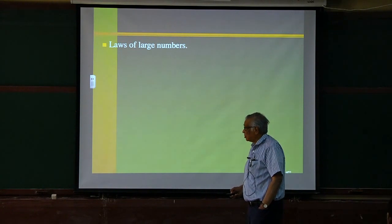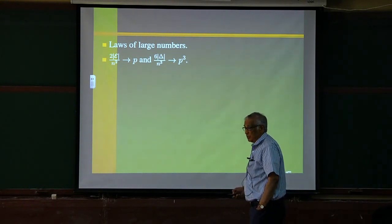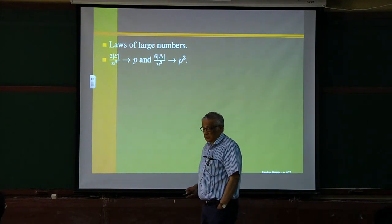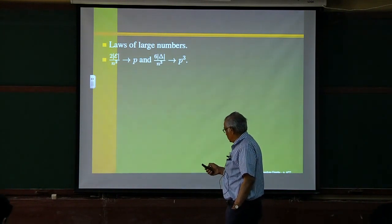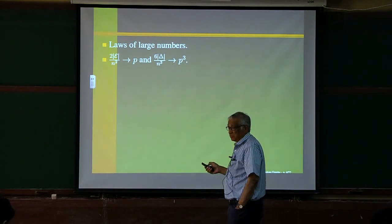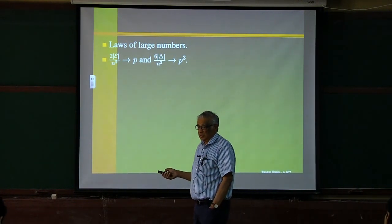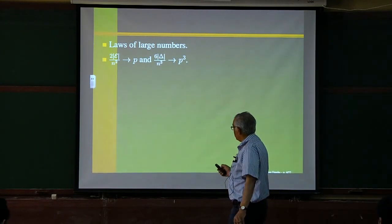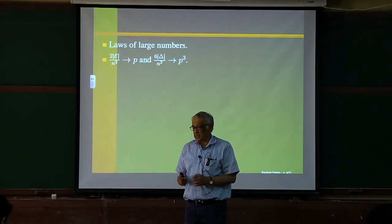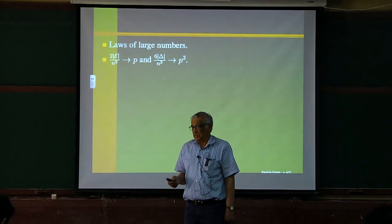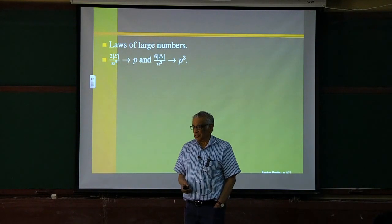The law of large numbers holds for this model. For example, twice the number of edges divided by N² has expectation P and converges to P — it's essentially a sum of independent Bernoulli random variables. For triangles, two triangles may share an edge, but that's only local correlation, so the law of large numbers is still valid.